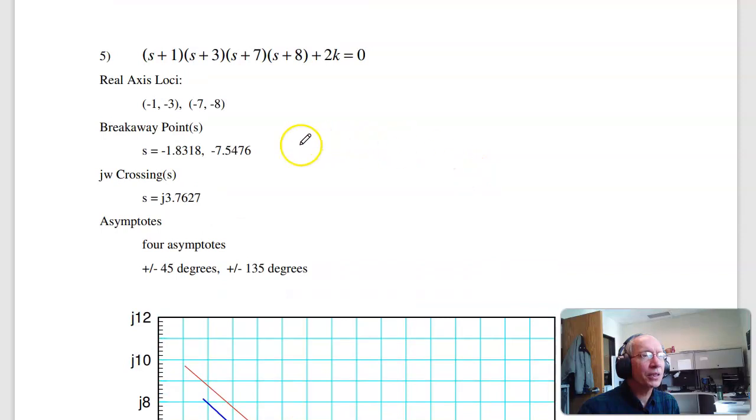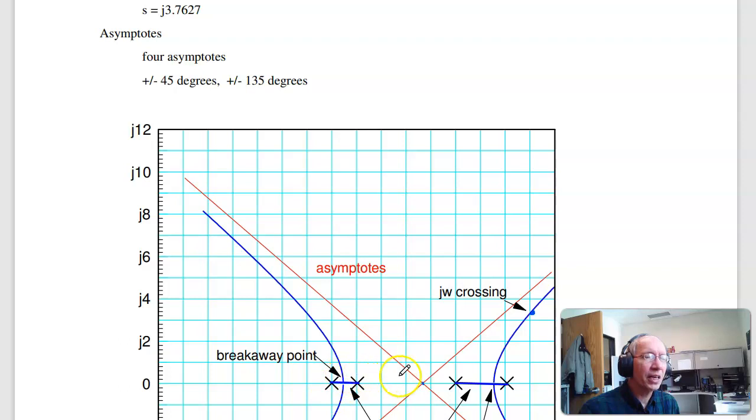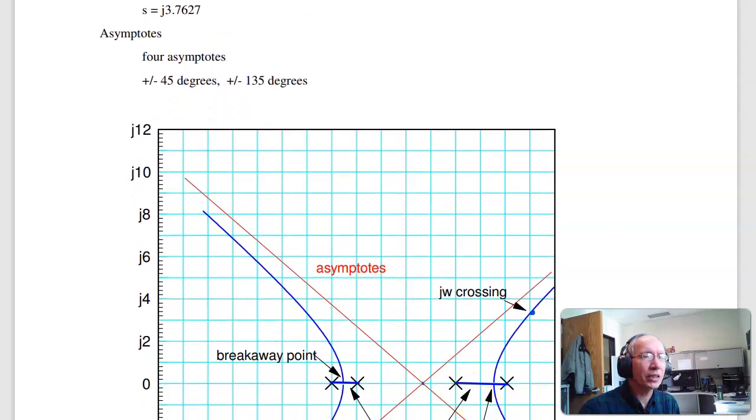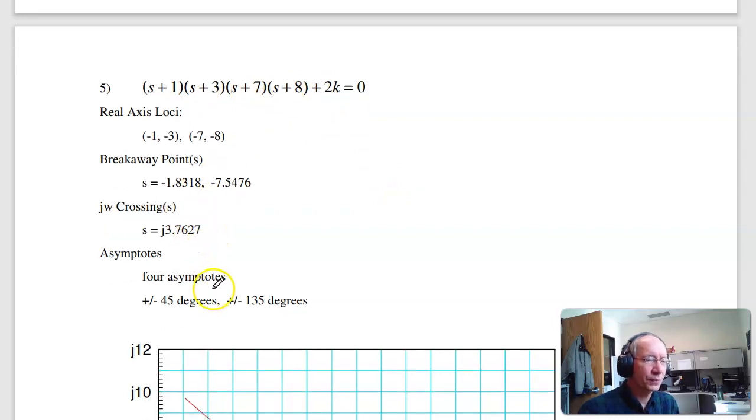In terms of numbers, here's what you should get. The real axis loci are between minus 1, minus 3, minus 7, minus 8. Breakaway points, again found numerically. I did a search, x plus j point 1. There's the breakaway points. J omega crossing, again is found numerically. Search until the angles add up to 180. If you plug in s equals j 3.76, I get 180 degrees. And four asymptotes.